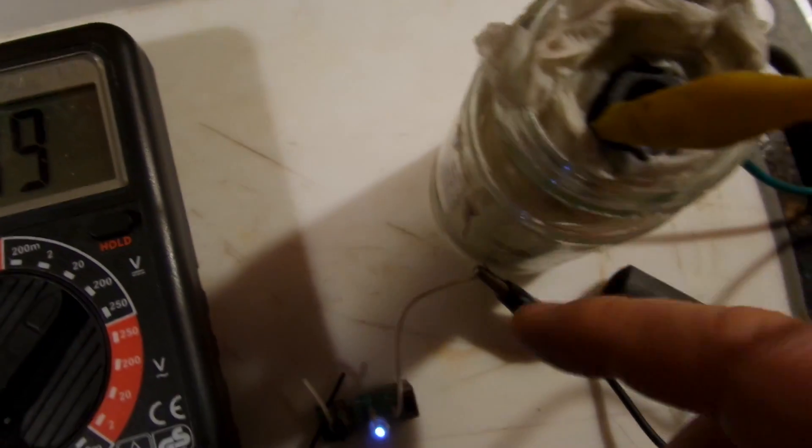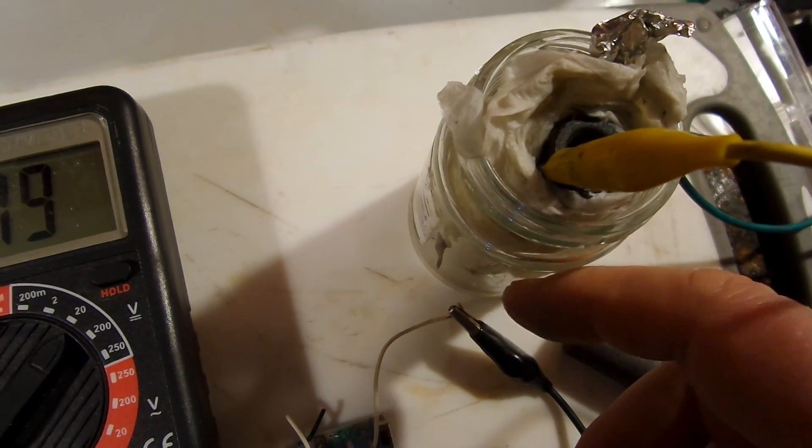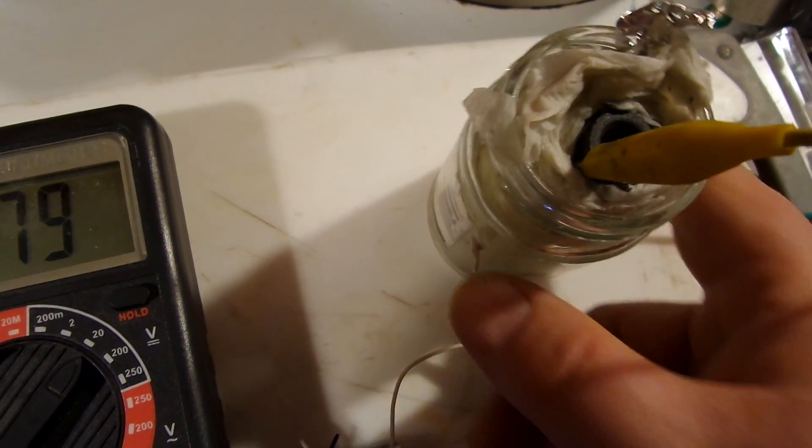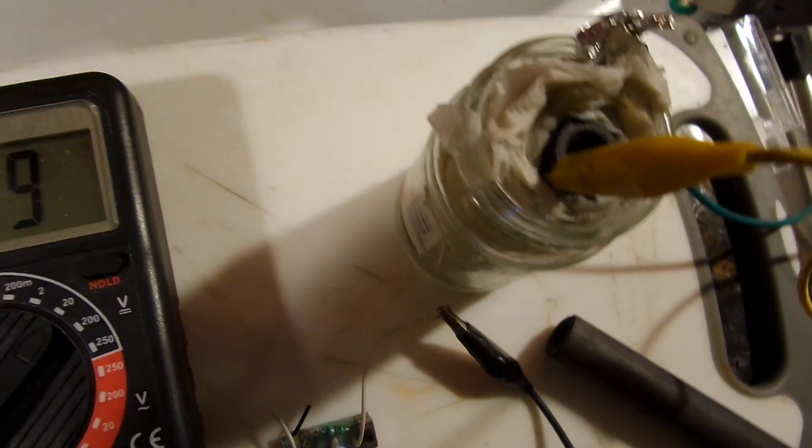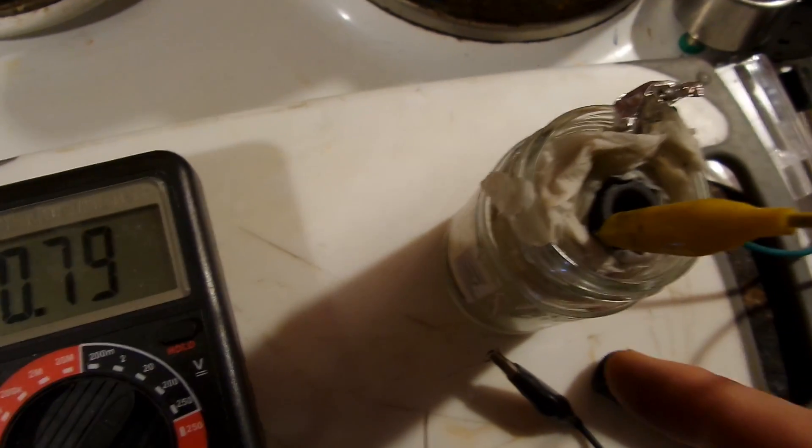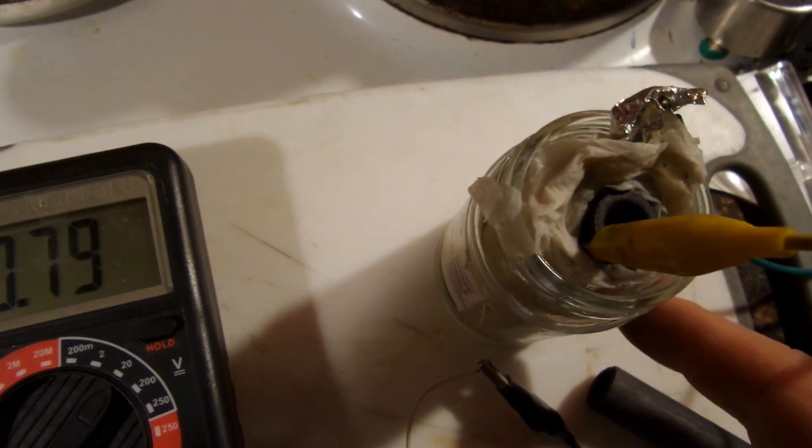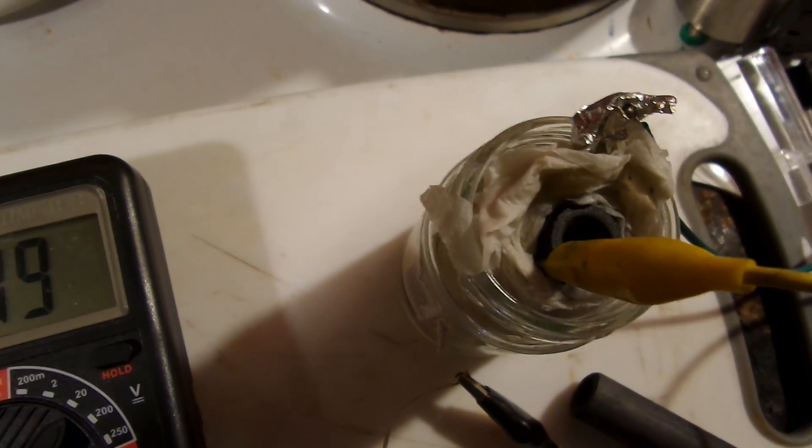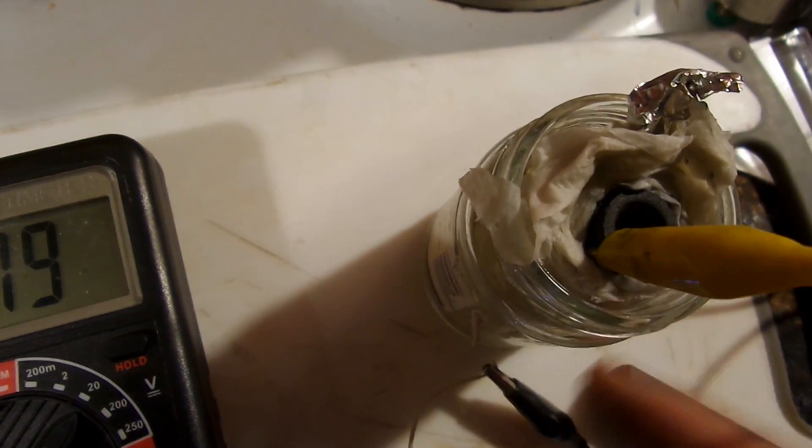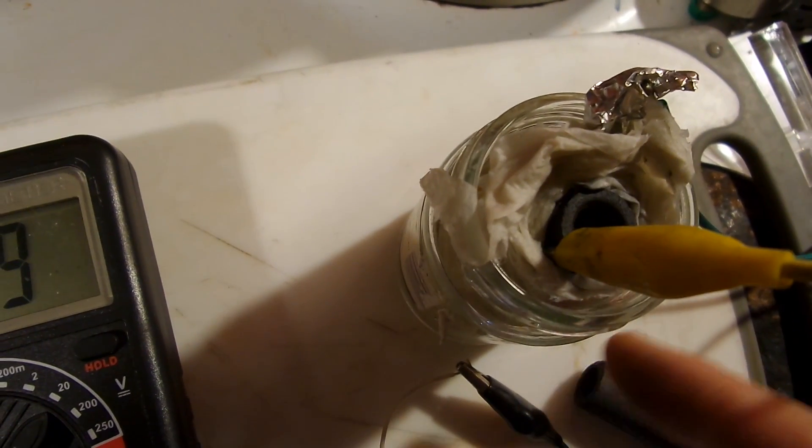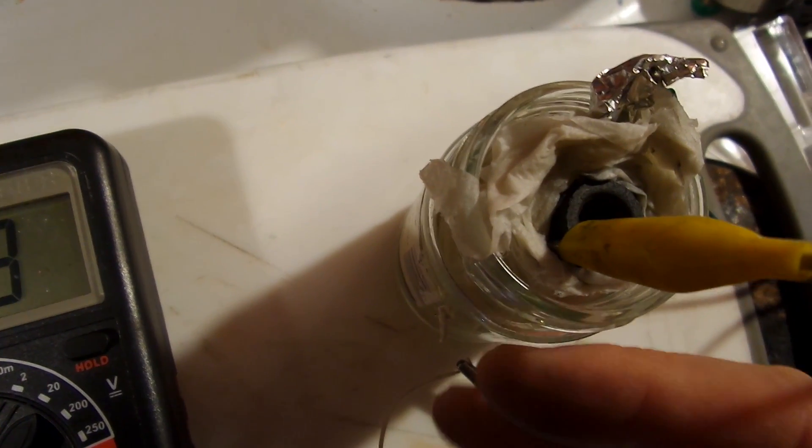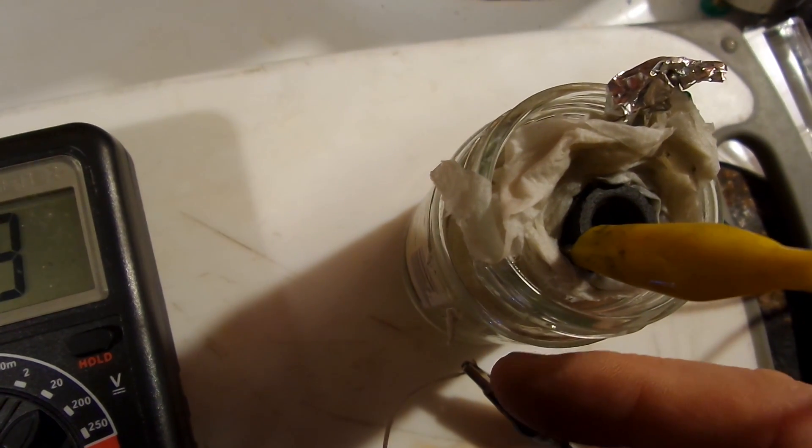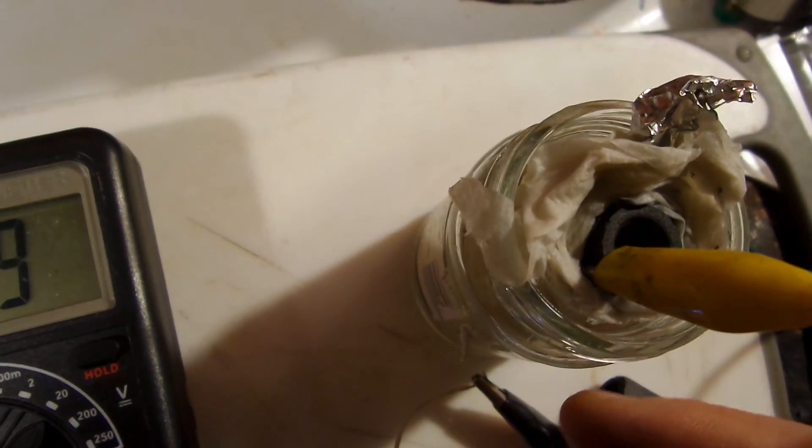In this glass bottle I put firewood ash water. Just take firewood ash from a wood fire and put water in there. This distillate works as an electrolyte. You can also use sodium carbonate, calcium carbonate, or potassium carbonate.